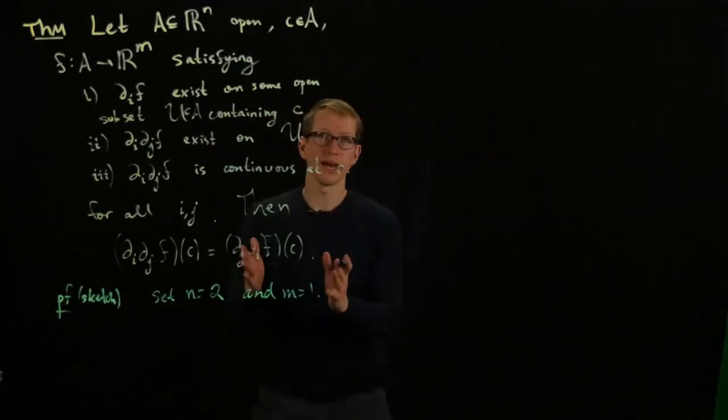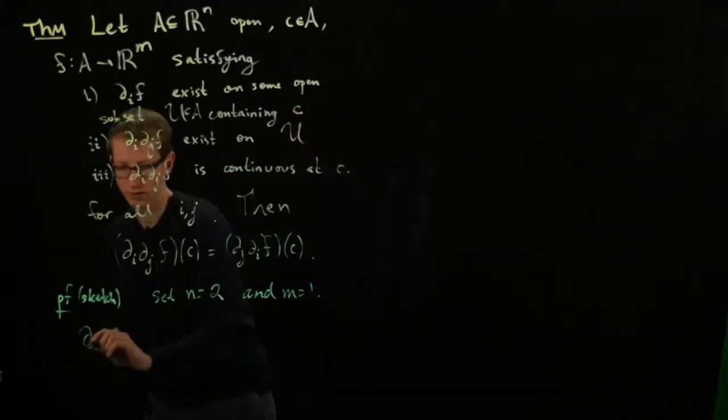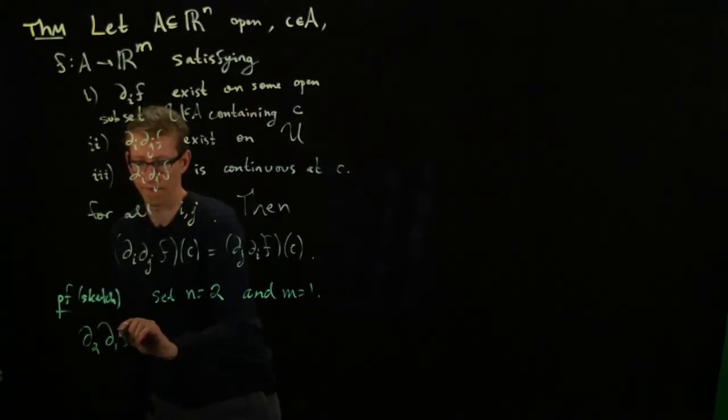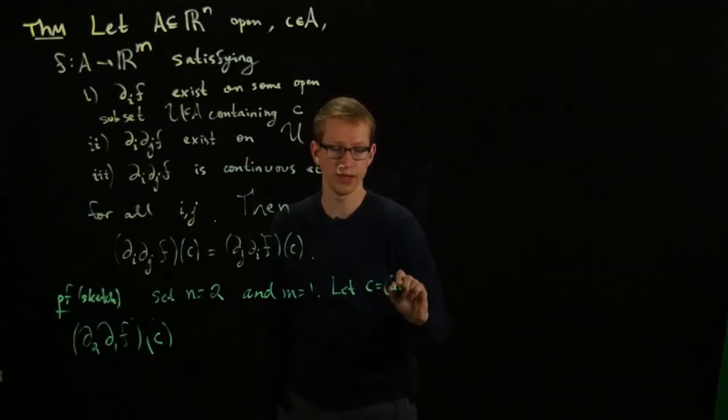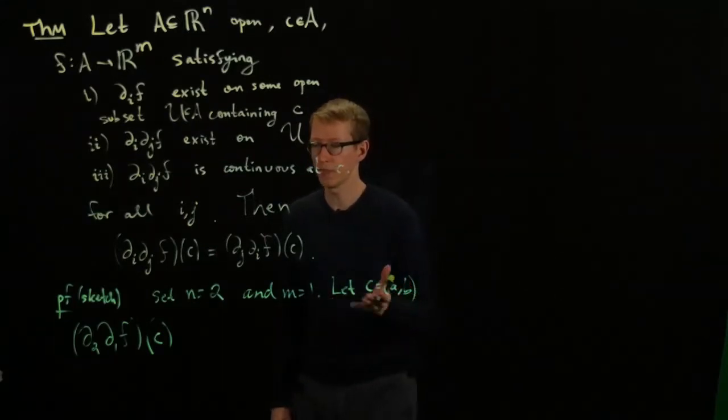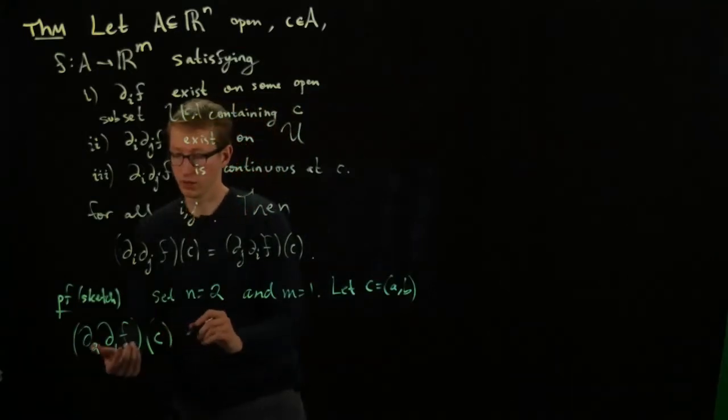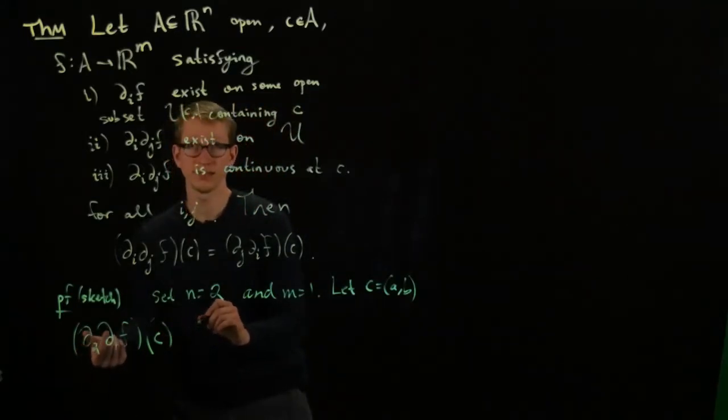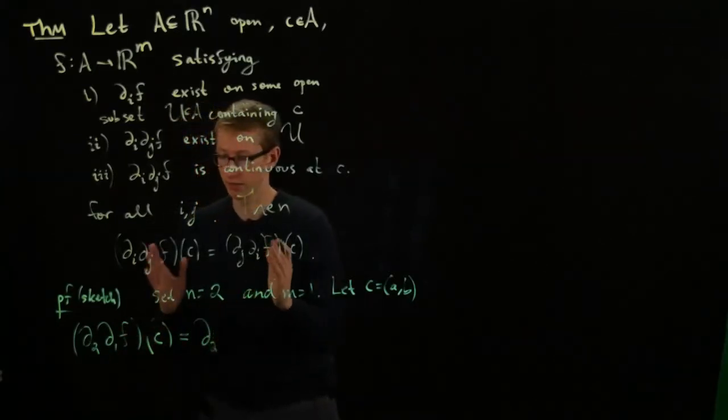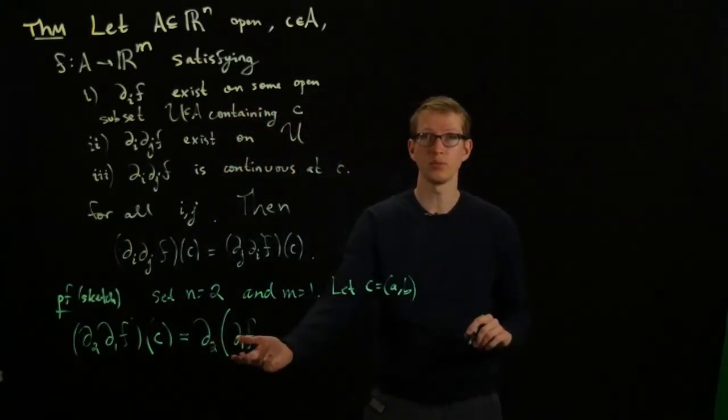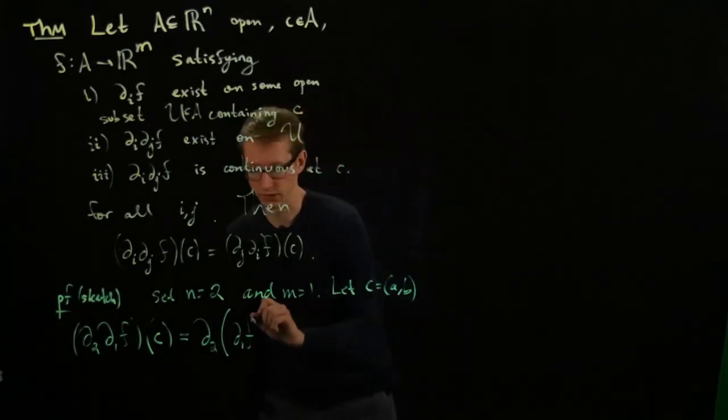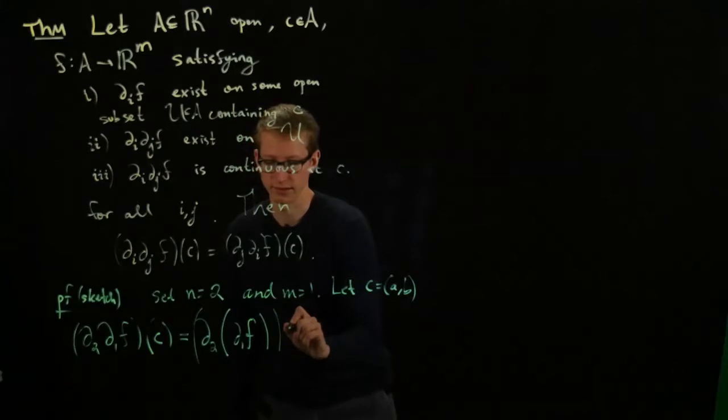Let's look at the first partial derivative. Let's consider the expression of taking the partial derivative in the first direction and then in the second direction. Let C equal (a,b). We have some point (a,b) and we're going to look at what the value is. I'm going to take the second derivative of a function, and that function is going to be the partial derivative of F in the first direction. Then I'll evaluate that at (a,b).